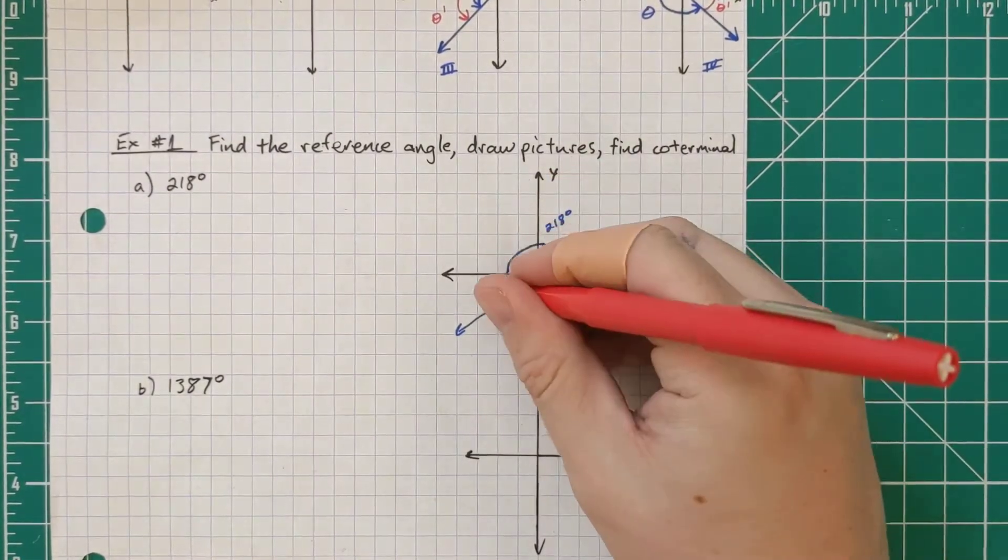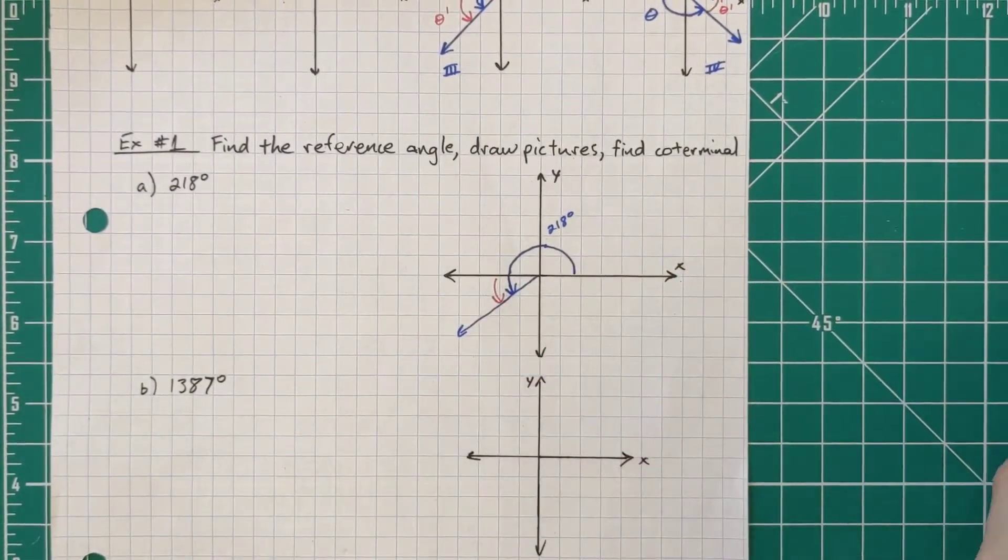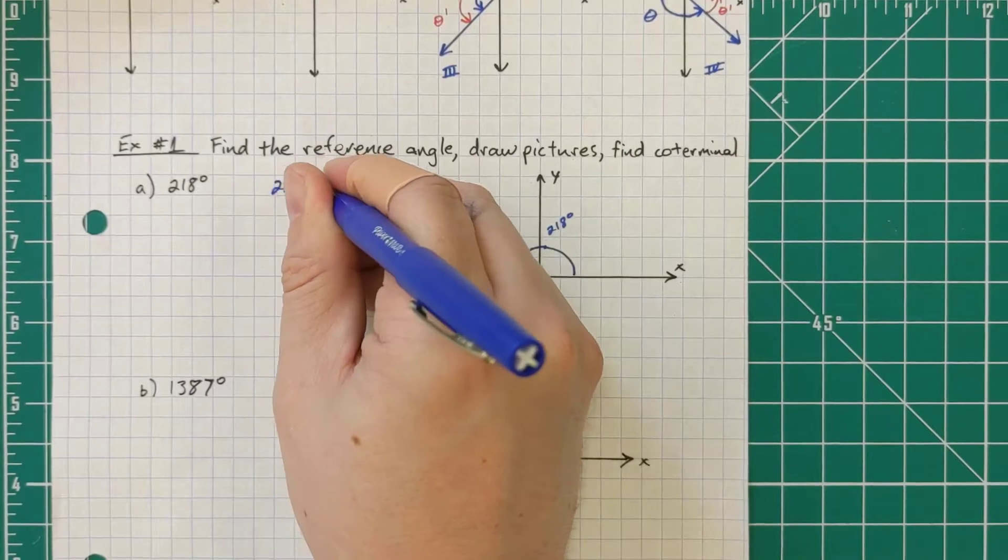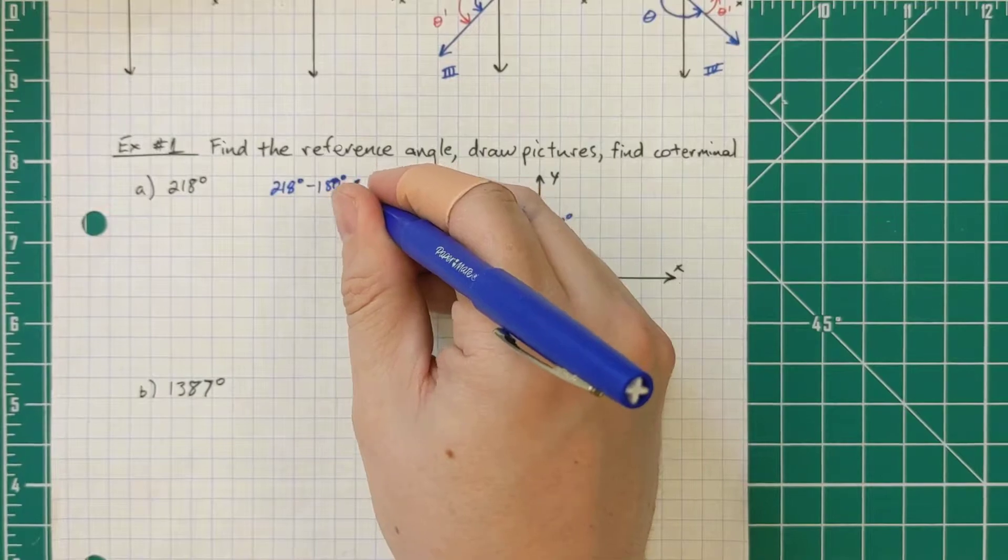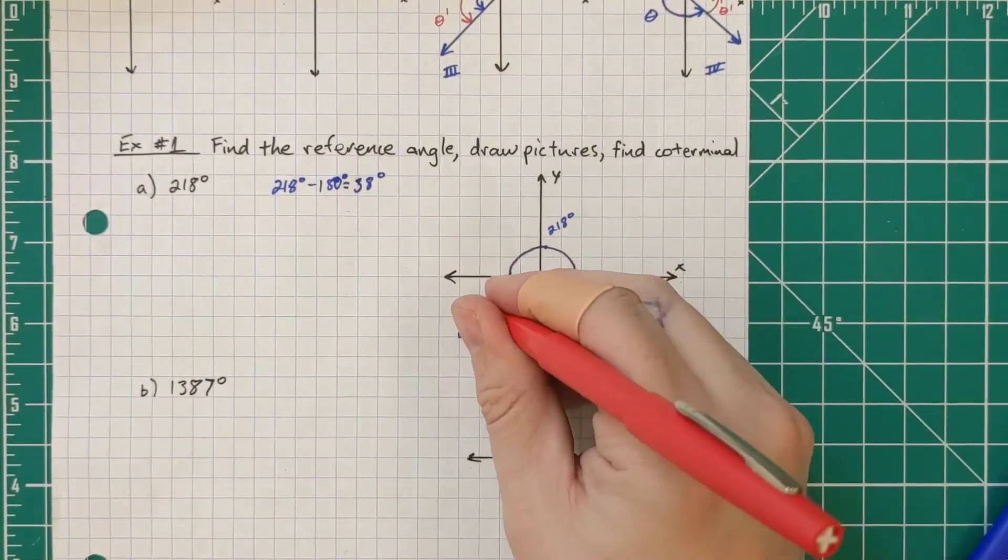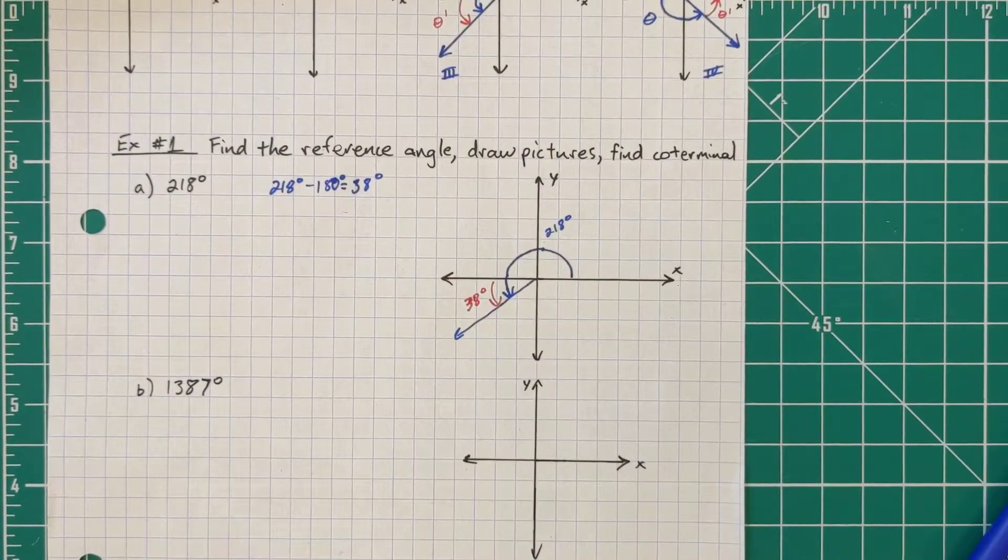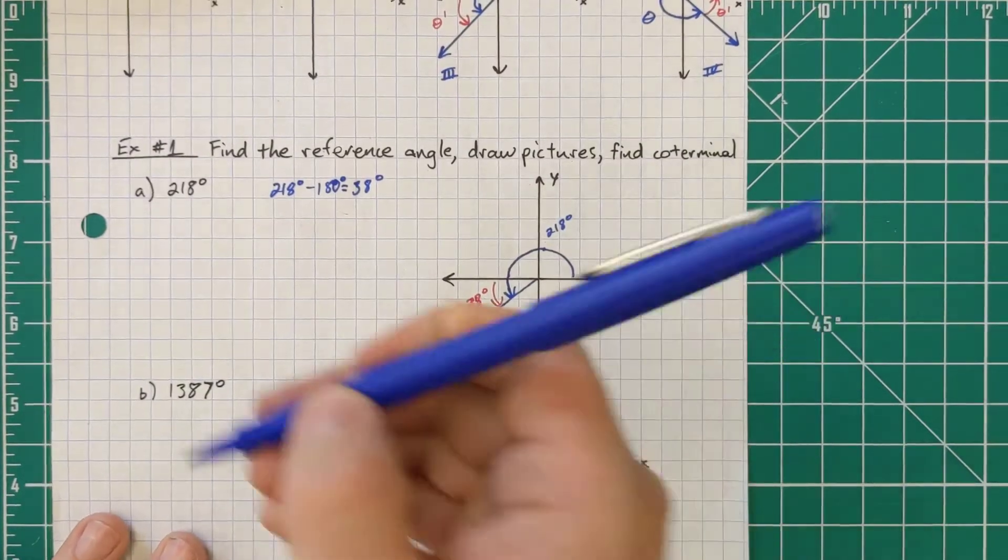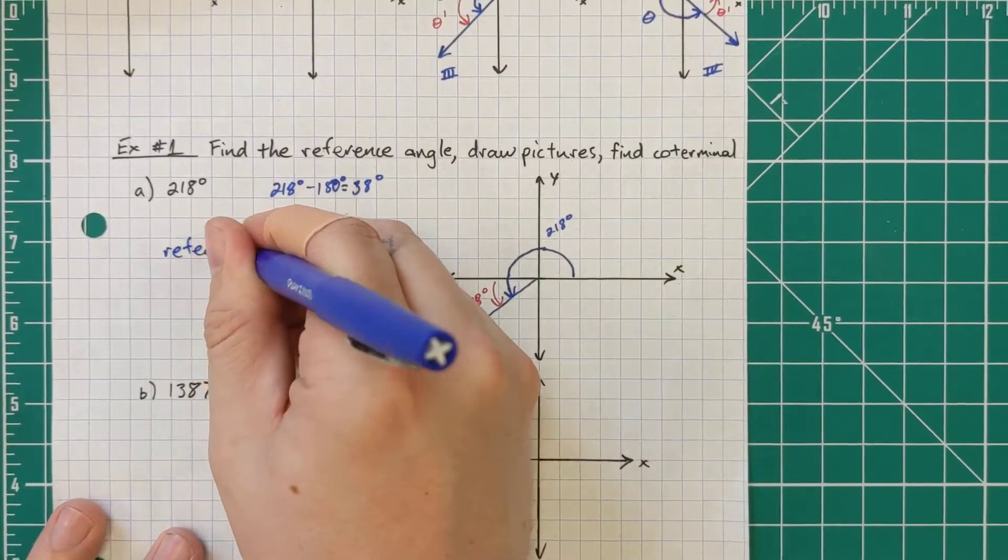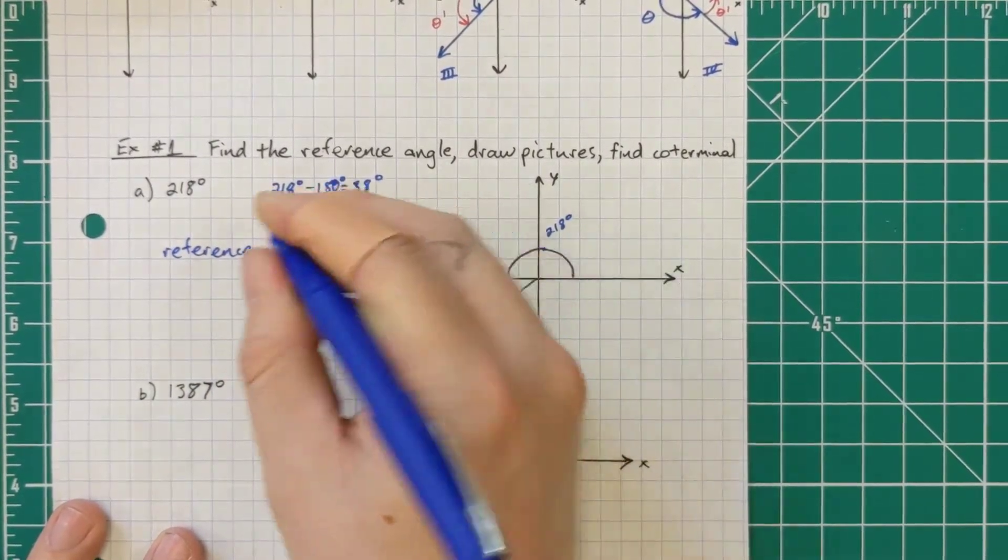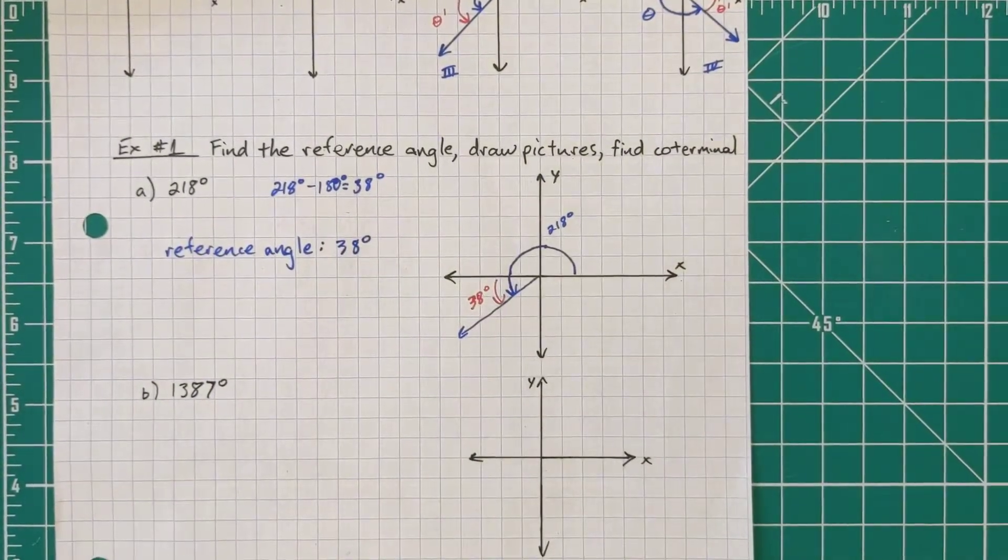My reference angle. Remember, it's how much further than 180 did I go? So 218 degrees minus 180 degrees gave us 38 degrees. So our reference angle is 38 degrees. Reference angle for 218 degrees is 38 degrees.